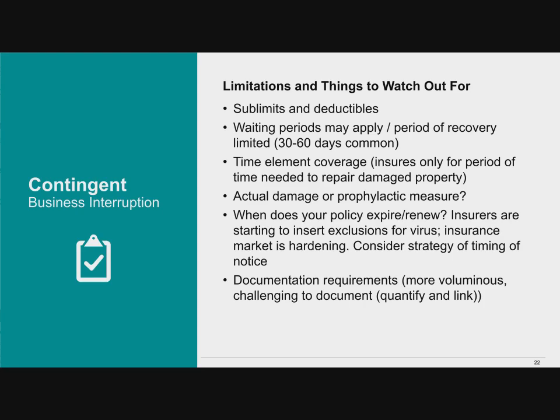Watch out for potential exclusions — a number of CBI policies, particularly post-SARS, exclude viruses, pandemics, or biological agents. There might also be pollution exclusions. In terms of limitations, there are very commonly sublimits and deductibles. Many CBI policies these days require specification of suppliers, and those suppliers might be sublimited. CBI insurance is usually limited to your first-tier supplier, so if your supplier's own supplier is affected, that CBI policy may not apply.